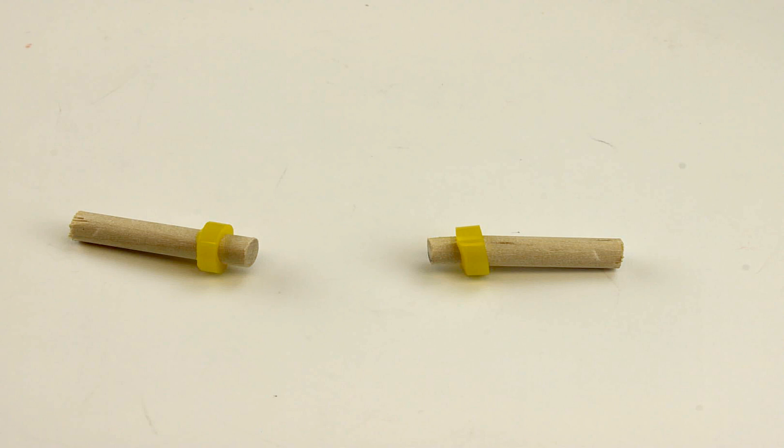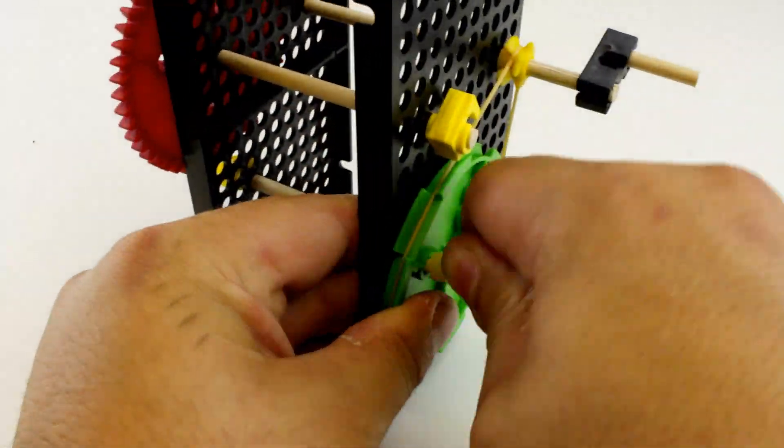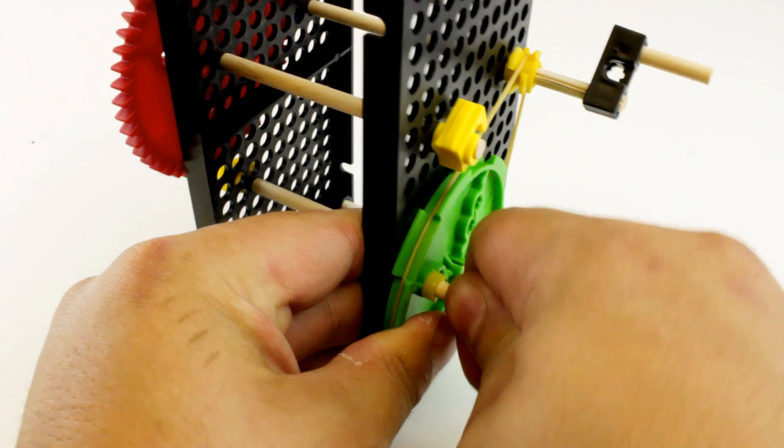Cut two dowels to 30mm, which is about an inch and an eighth, and then add small pieces of side stop onto the bottom. Push the dowels through the gear and the pulley. Don't push them through far enough that they touch the hole plate.